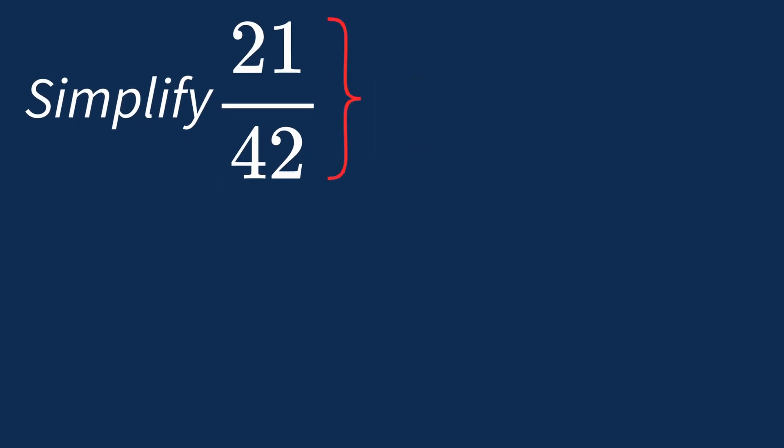To simplify 21 over 42, we need to look for the common factors between the top number, the numerator, and the bottom number, the denominator.